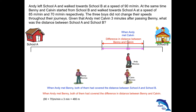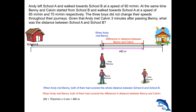Let's move back in time to when Andy met Benny. Calvin was 480 metres behind Benny at that point. The difference in speed between Benny and Calvin is 15 metres per minute, meaning for every one minute Benny covers a longer distance of 15 metres. So to find how long it takes for Benny to be 480 metres ahead of Calvin, we take 480 divided by 15, which gives 32 minutes. So 32 minutes after they started walking, Andy met Benny.